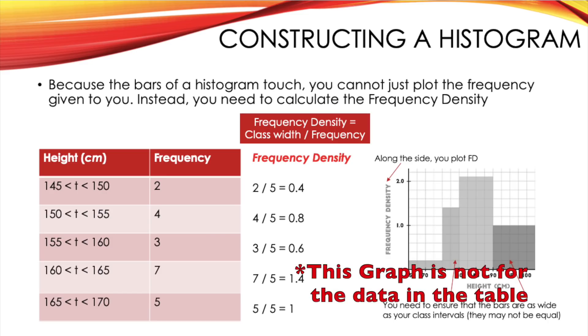When you come to plot the data for a histogram you cannot just plot the frequency as the bars. Instead you need to work out the frequency density for each bar. In order to calculate the frequency density you need to get the class width and divide that by the frequency.